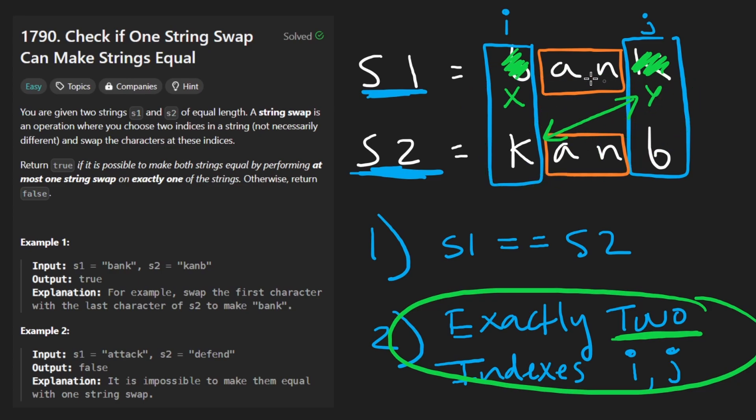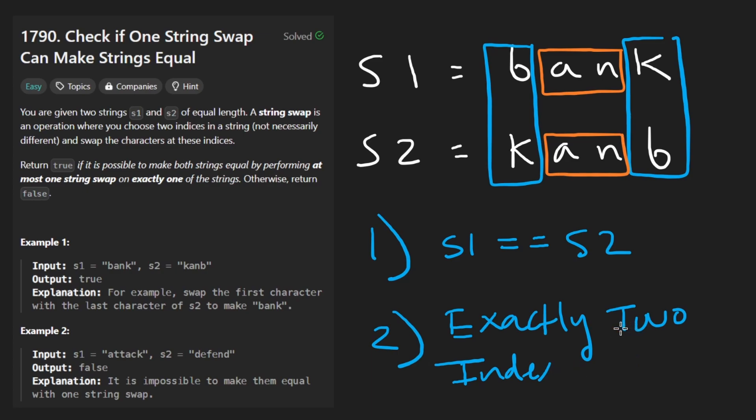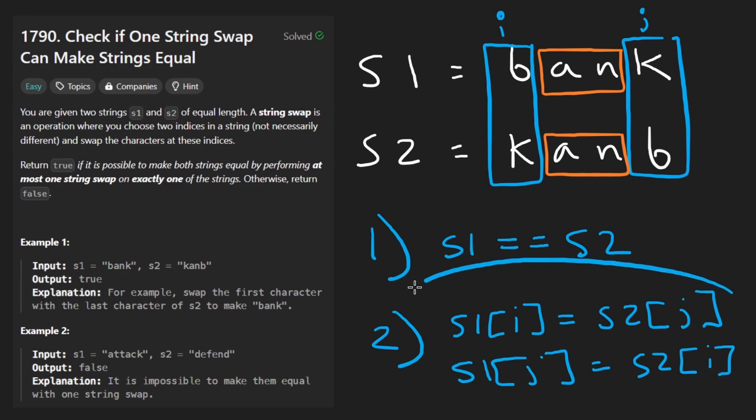In this example they wouldn't be but now if I go back to the original example we can see that this k is indeed equal to this k and this b is equal to this b. So for those two positions just to kind of summarize, we would want the ith position in the first string to be equal to the jth position in the second string and vice versa. So s1 of j would be equal to s2 of i. If this doesn't make sense right now it'll probably make sense when I code it up. So that's mainly what we want to do.